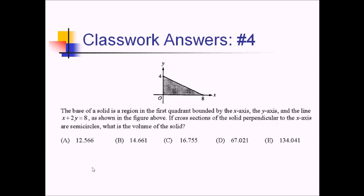We can write A of x equals 1 half pi r squared. We have to figure out r in terms of x. We have these semicircles, and the base of each semicircle is just the distance from this function — this line — down to the x-axis. That's the whole distance across the semicircle. But for this formula we actually need the radius, so we need to first figure out this distance and then take half of it to get the radius.